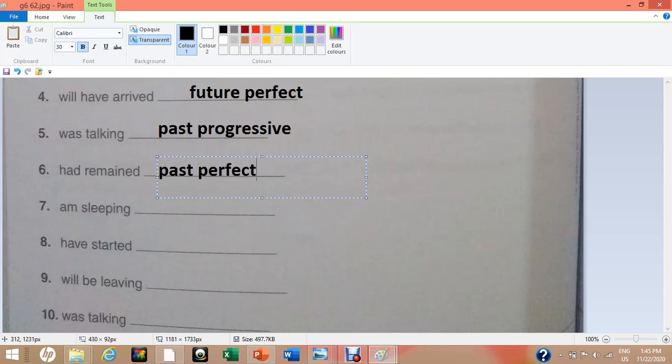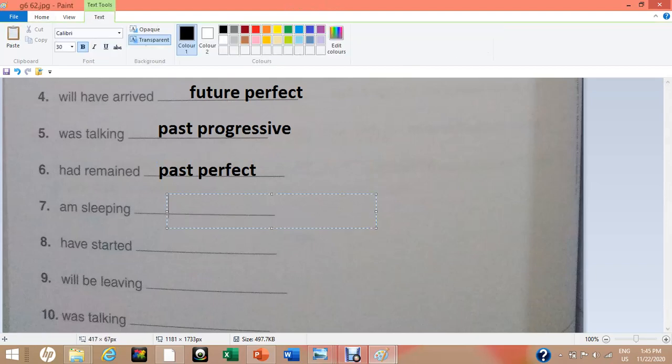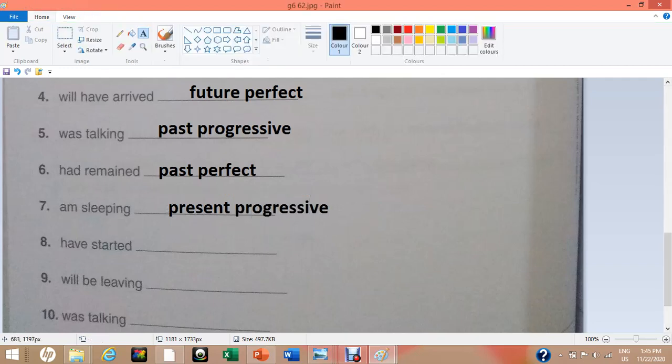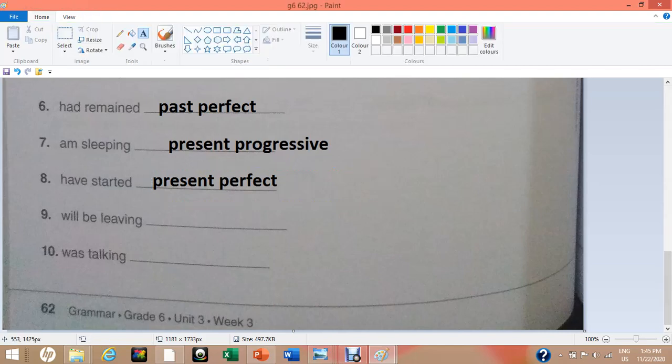Remain is the past participle verb. Number seven, am sleeping. This verb phrase will be included in the tense of present progressive. Number eight, have started. For the tense of present perfect, we use helping verbs has or have along with the past participle verb. Present perfect tense will have this verb phrase have started.